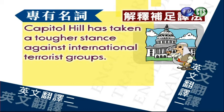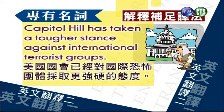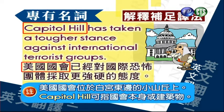例子：Capital Hill has taken a tougher stance against international terrorist groups. 美国国会已经对国际恐怖团体采取更强硬的态度。我们来注释一下：美国国会位于白宫东边的小山丘上，Capitol Hill可以指国会本身或其建筑物。